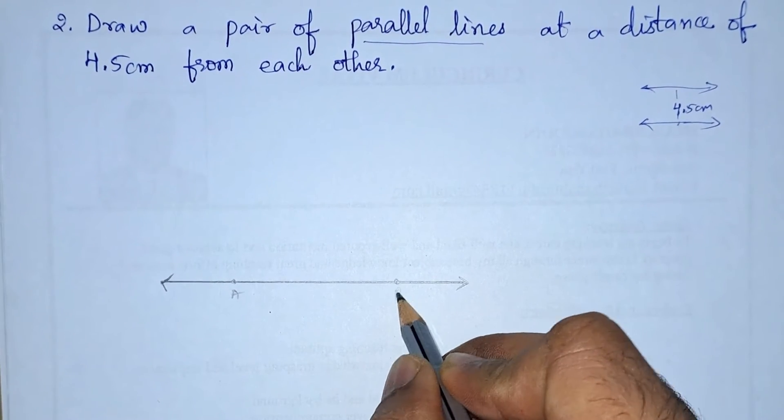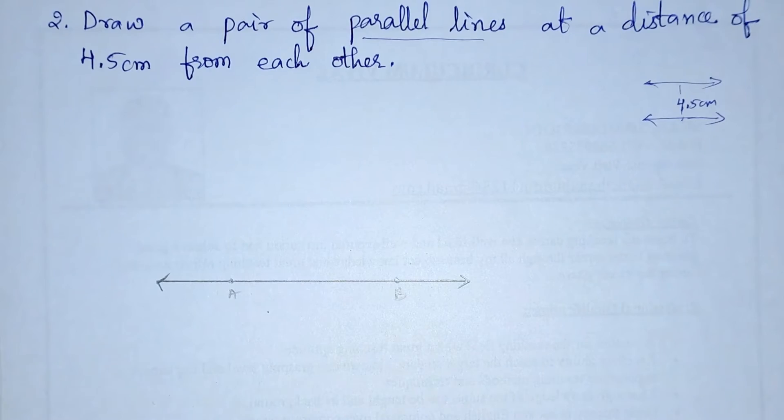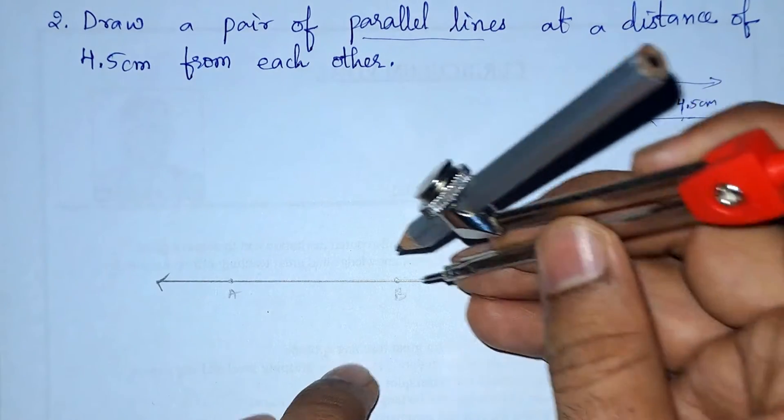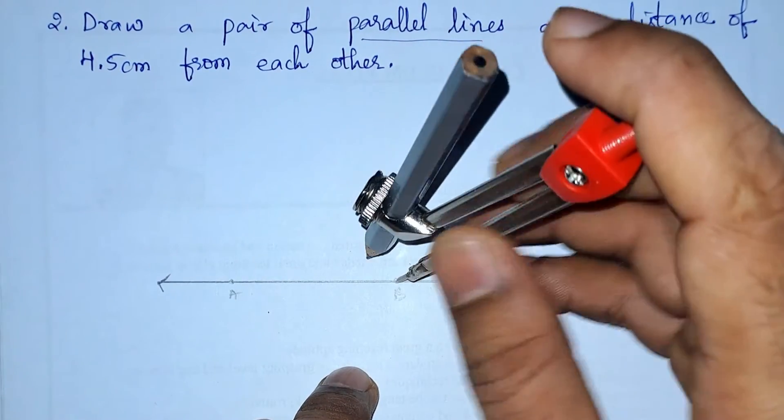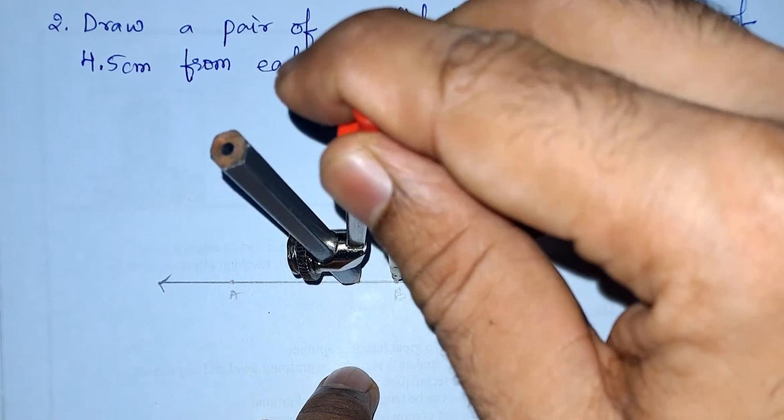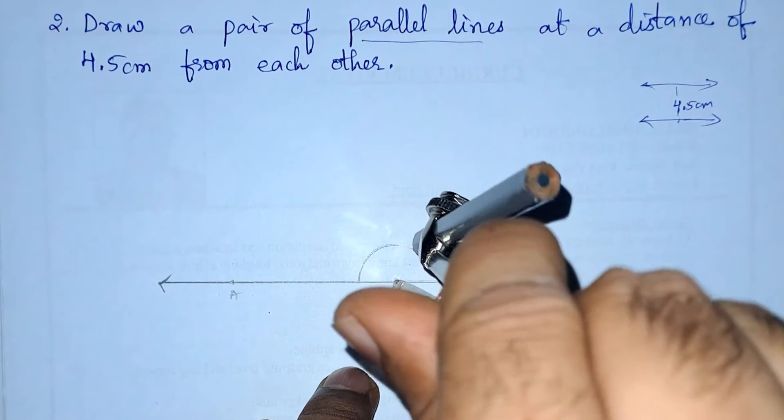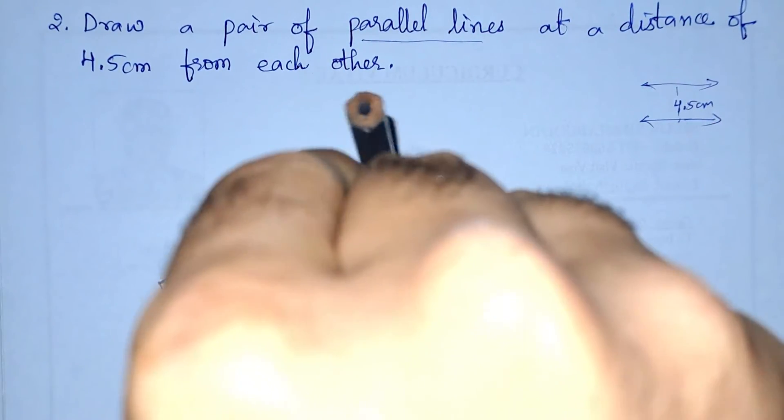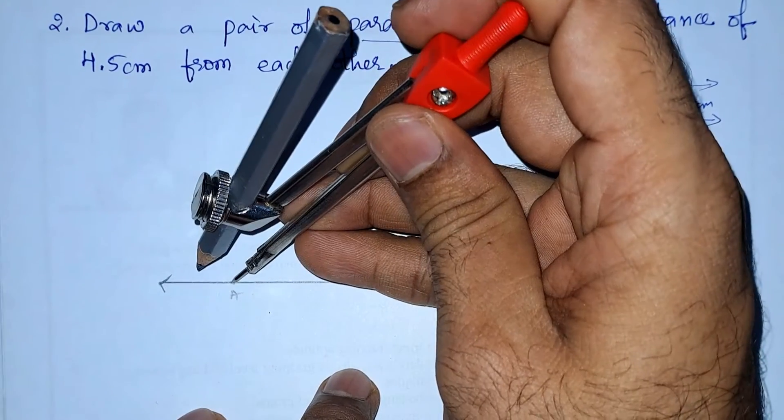So let us draw a semicircle from B, and from A.